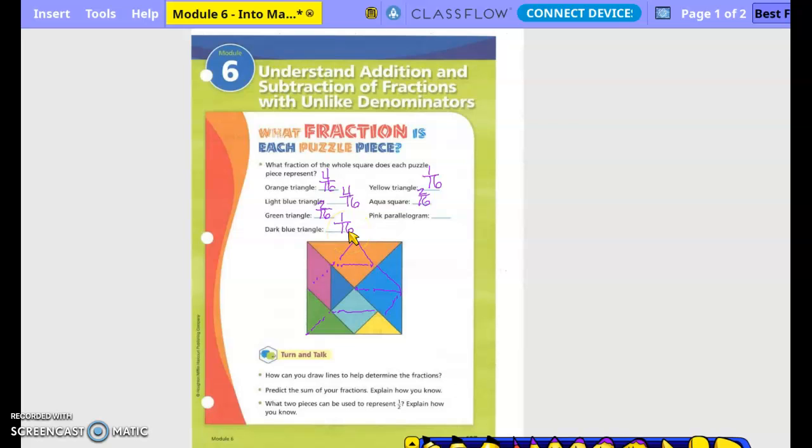Okay. And then the pink parallelogram has how many? Two. Okay. So if we would add all those up, 4/16 with 4/16 with 2/16 and so on, we should get what? 16/16 to make the whole square, right?